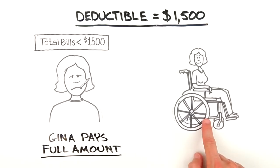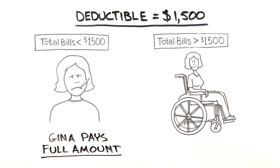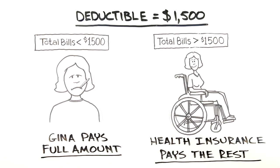However, if Gina has a catastrophic injury or serious illness that requires a lot of medical care to get better, she'll pay her $1,500 deductible and then her health insurance takes over to pay most, if not all, of her additional covered costs.